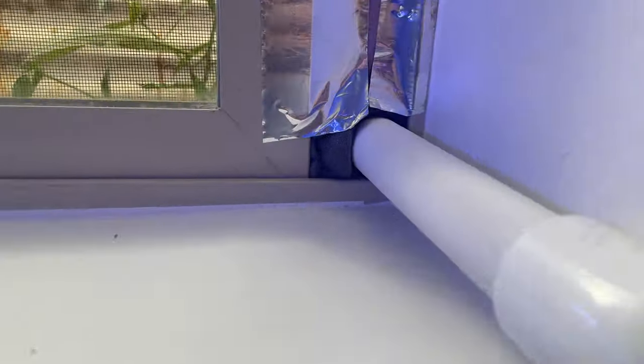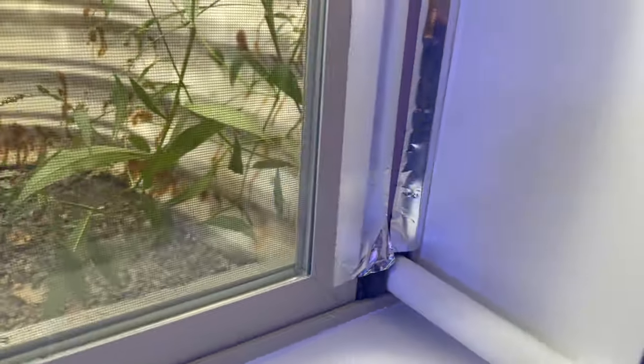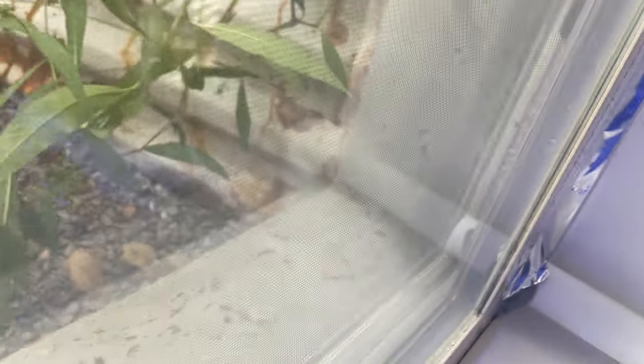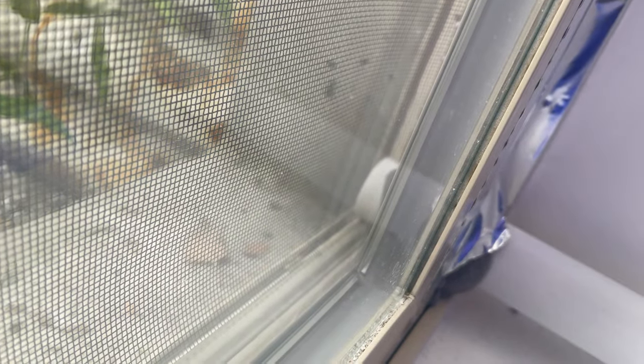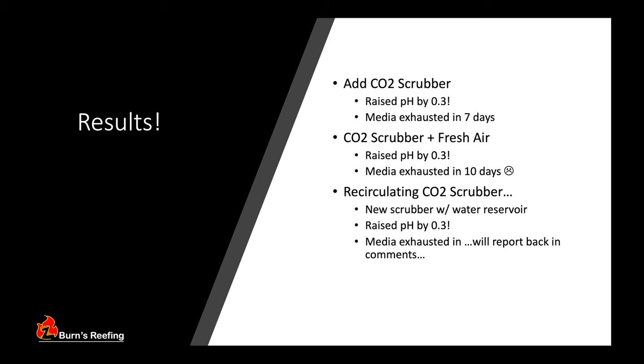So in short, the CO2 scrubber raised my pH by 0.3, and by adding the fresh air line, the media did last longer, but only about three days longer. So now instead of seven days, I could get ten days out of the media before my pH would start to dip back down again. So in summary, I would highly recommend trying a CO2 scrubber if you need to boost your pH, but know the media can get expensive, and it can exhaust pretty fast.